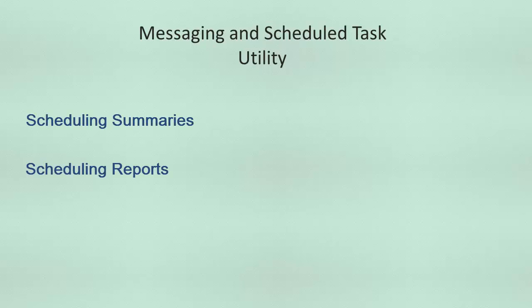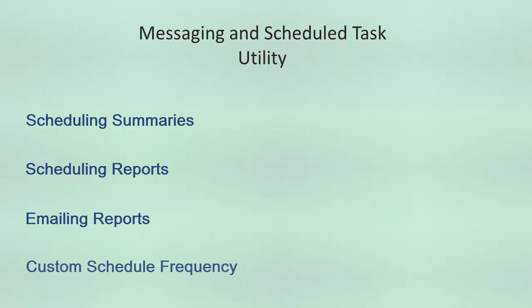The Messaging and Scheduled Task Utility is a versatile tool used to automate server-side tasks in the background. These tasks can include scheduling applications such as summaries or reports to run on a regular basis. You can then email these reports to a dynamic list of users on a daily, weekly, monthly, or any incremental basis you choose. You can save report outputs such as Excel, CSV, or PDF as an actual physical file on the Empower server.